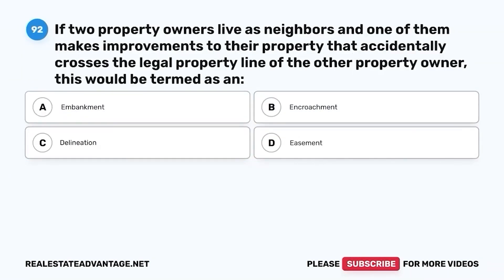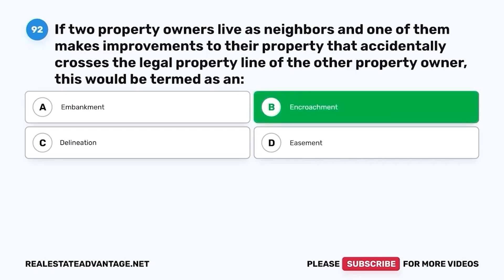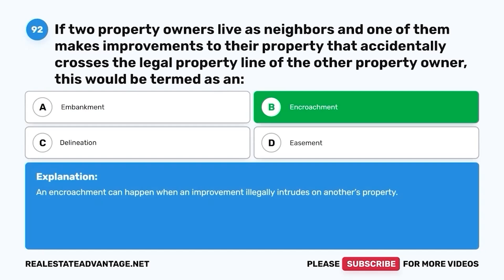Question 92. If two property owners live as neighbors, and one of them makes improvements to their property that accidentally crosses the legal property line of the other property owner, this would be termed as: A. Embankment. B. Encroachment. C. Delineation. D. Easement. The correct answer is B. Encroachment. An encroachment can happen when an improvement illegally intrudes on another's property.